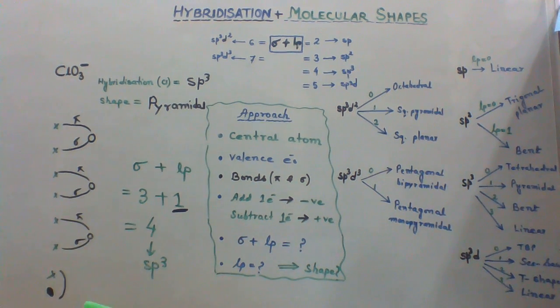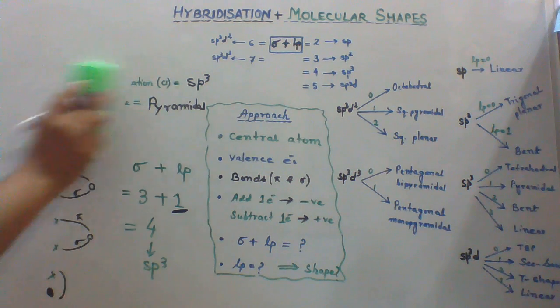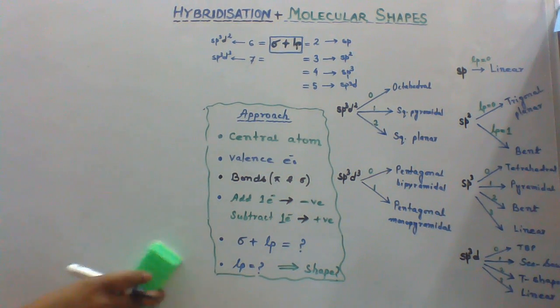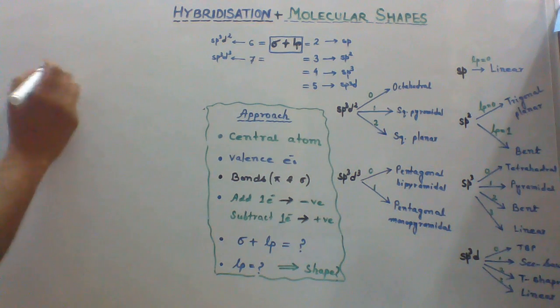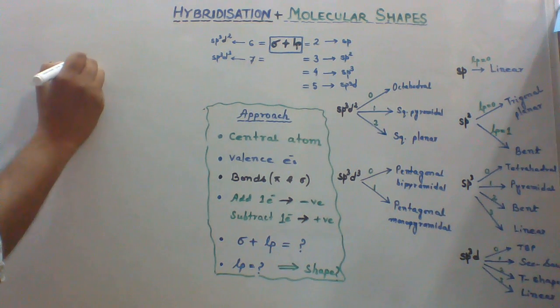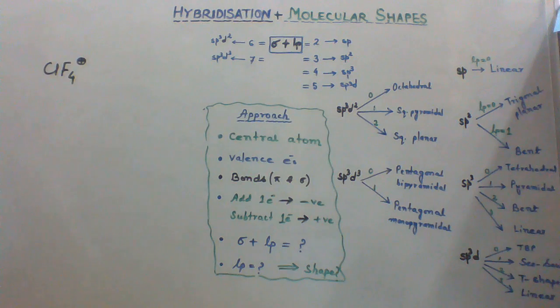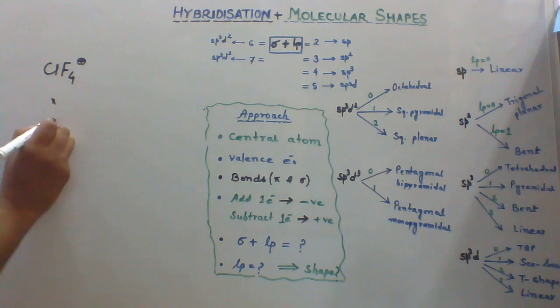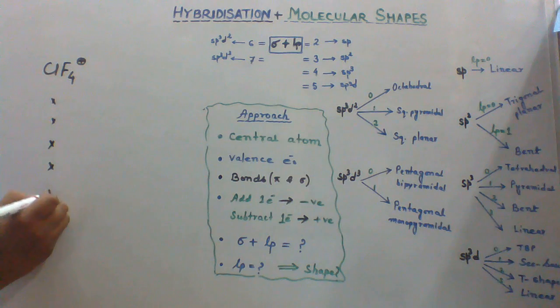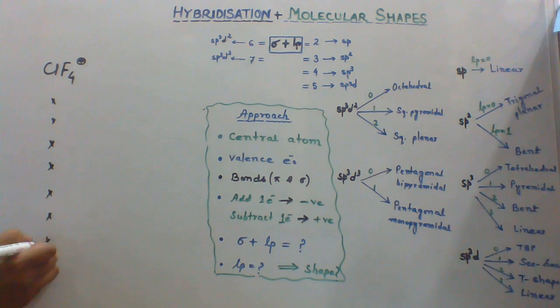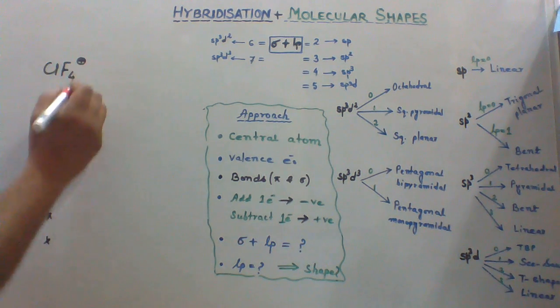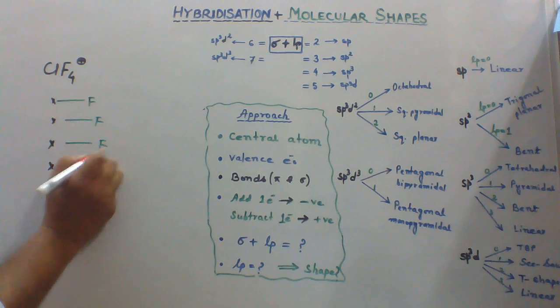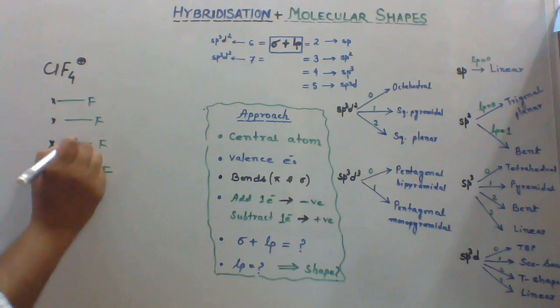Let's take another species. ClF4 plus. Chlorine is the central atom. It has 7 electrons in the valence shell and it has 4 fluorine atoms in the surroundings forming 4 sigma bonds.